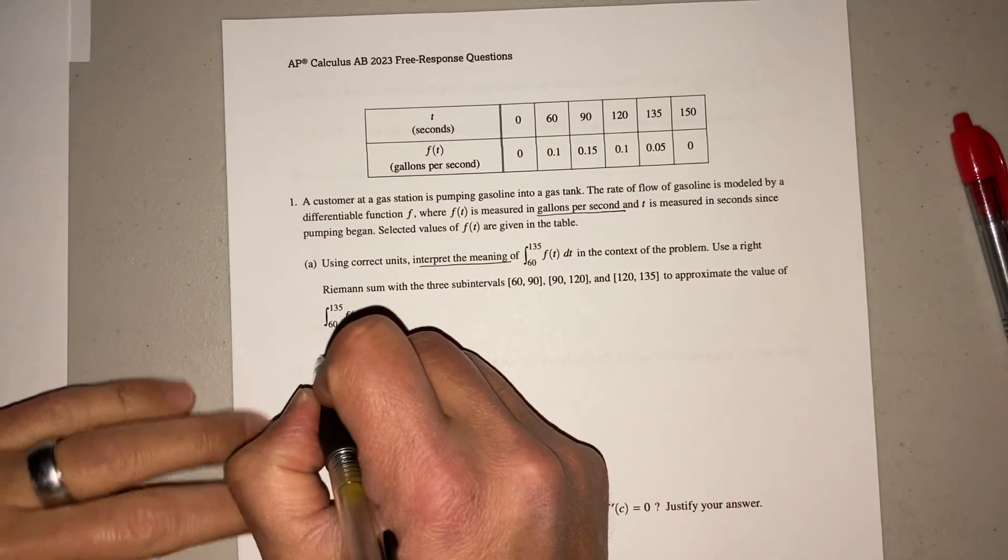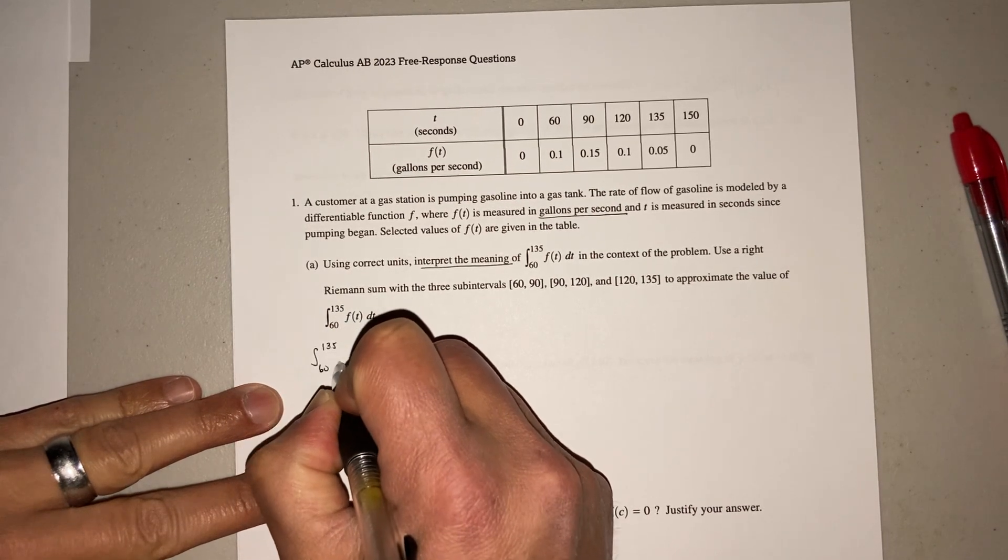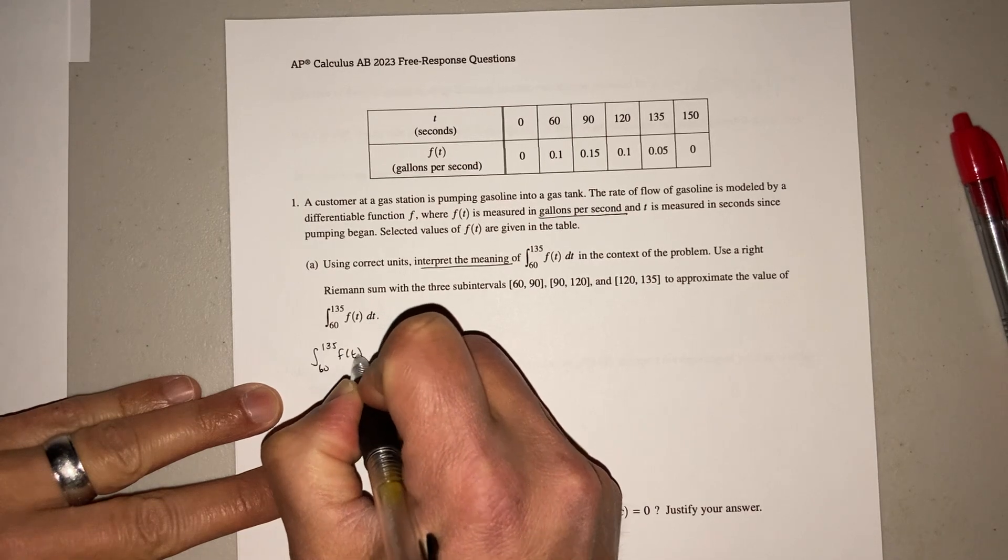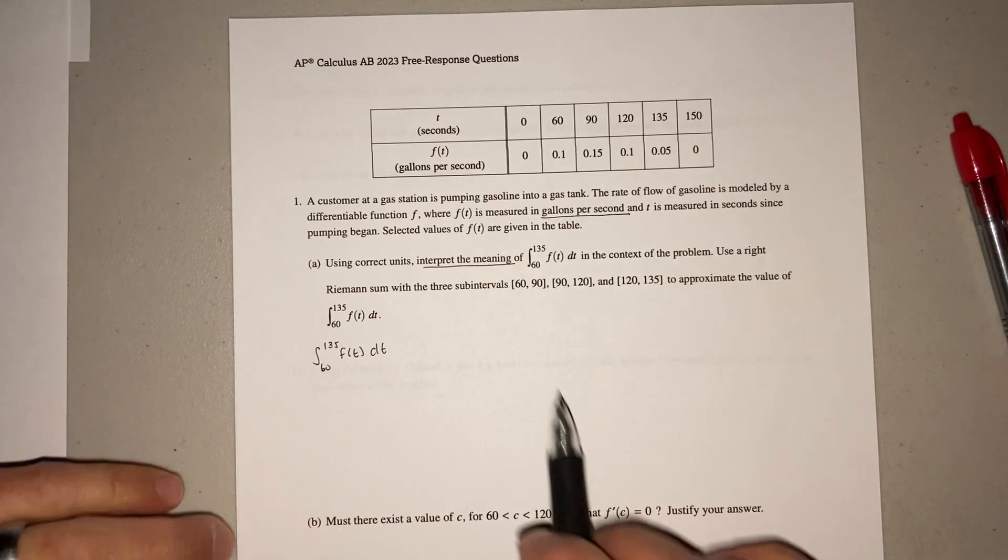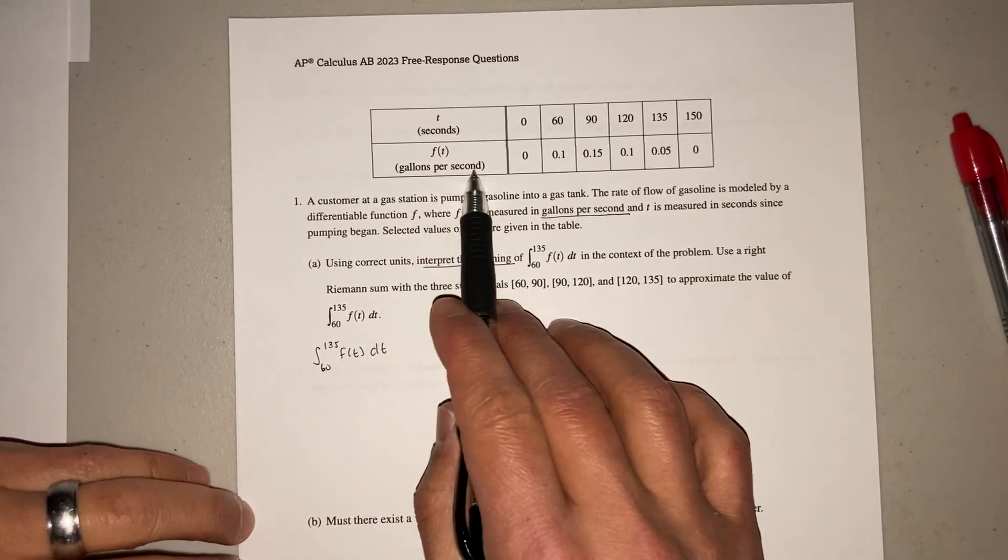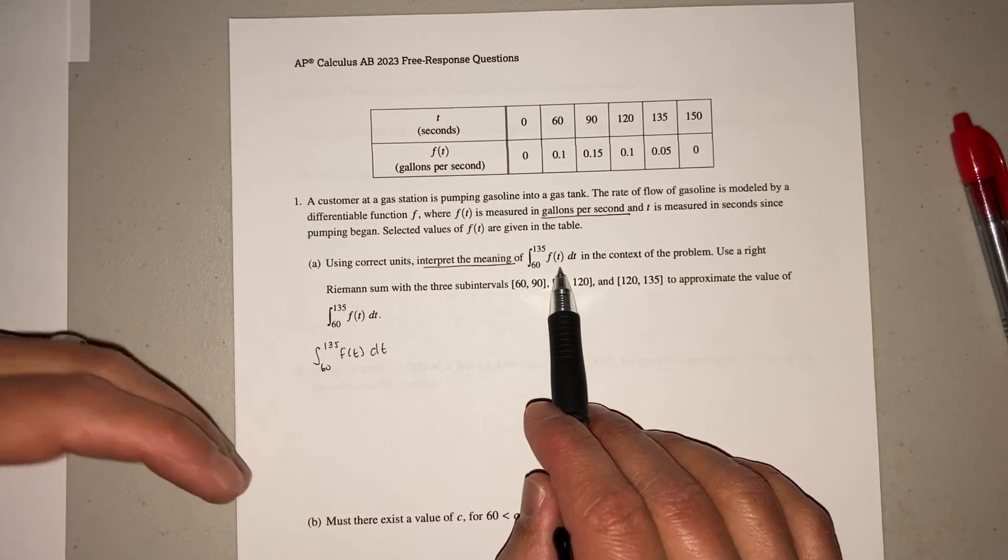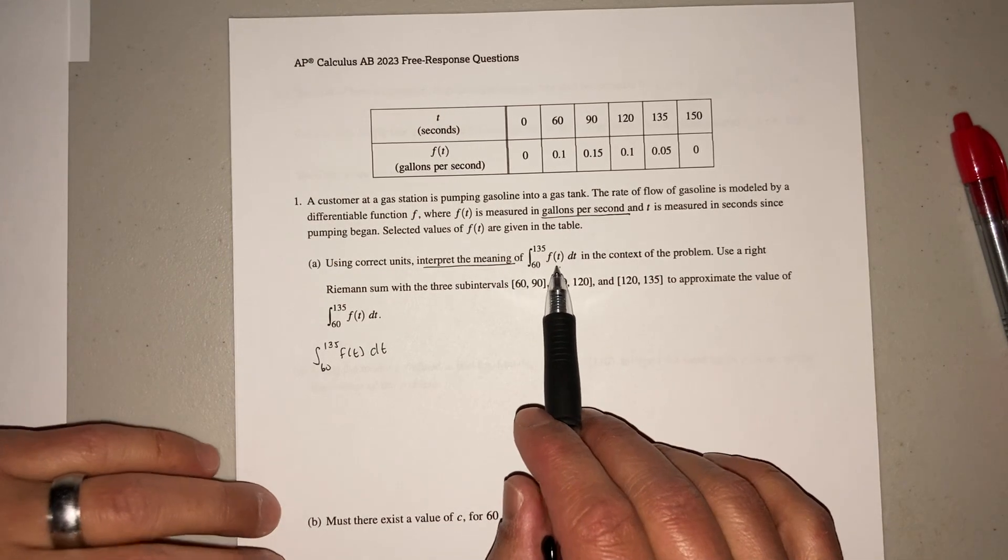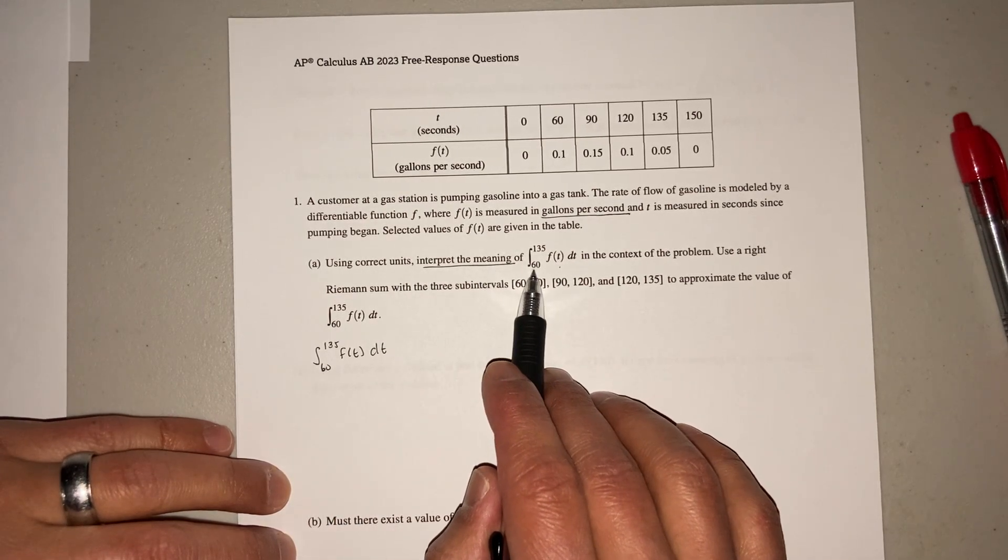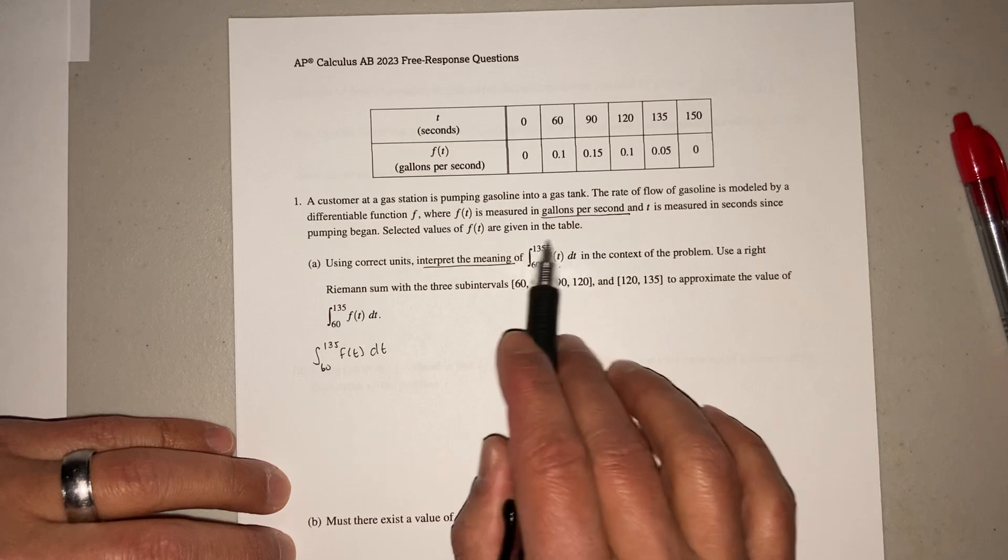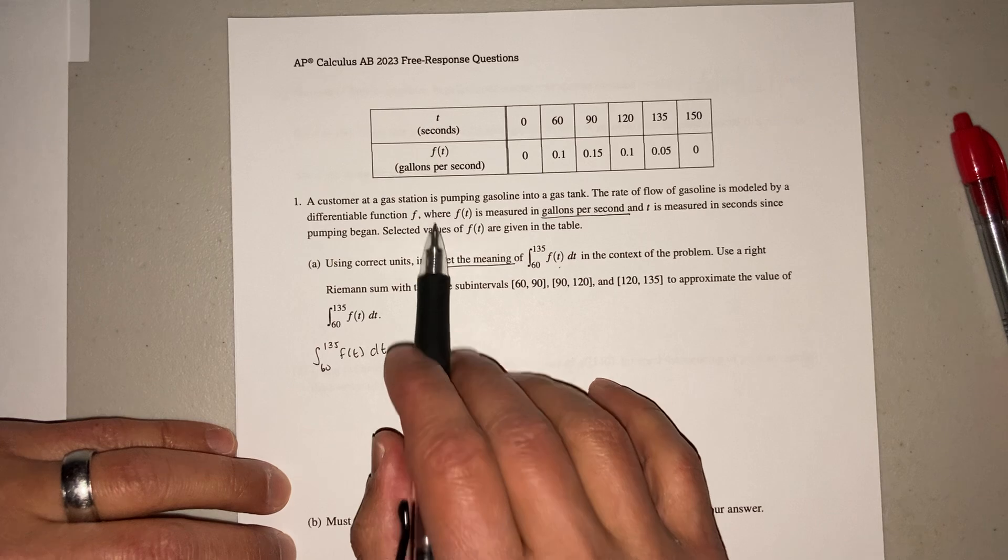So let's go ahead and do that first. So remember guys, when they give you an integral, that's a rate accumulation. So this is in gallons per second. That's a rate of change. So what happens when you integrate a rate? You get an amount. That's what you get. So here, when you integrate a rate, you're going to get the total amount of gasoline that's in the tank.